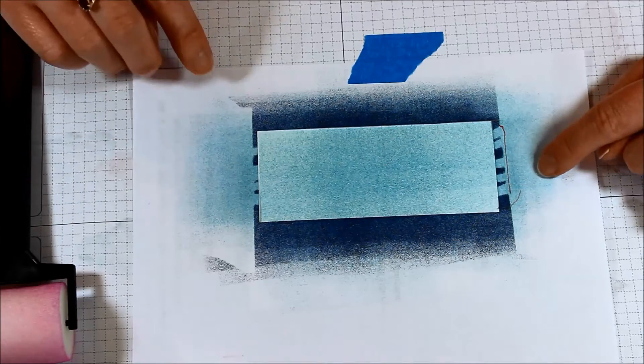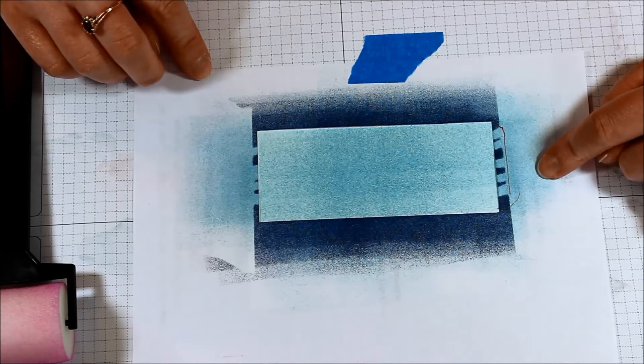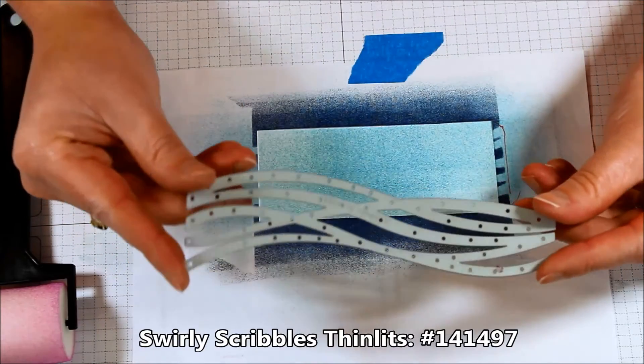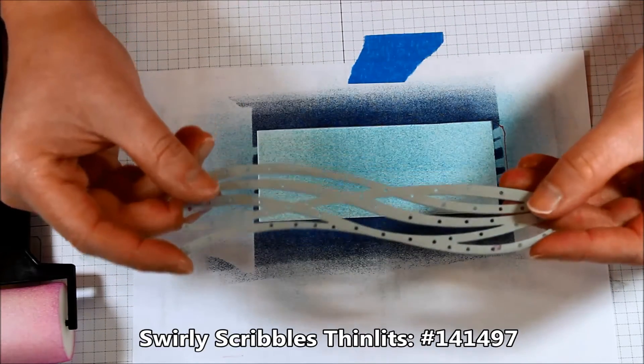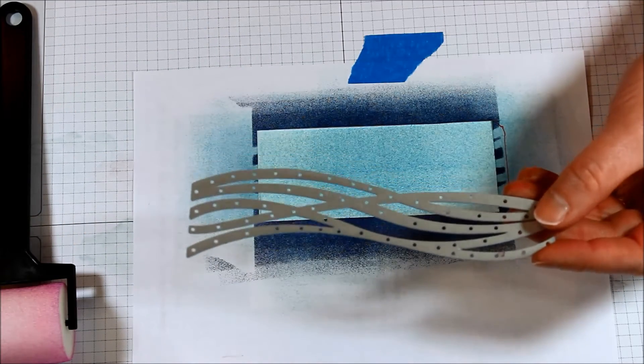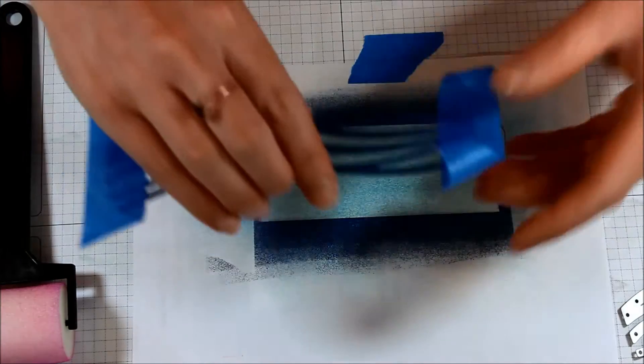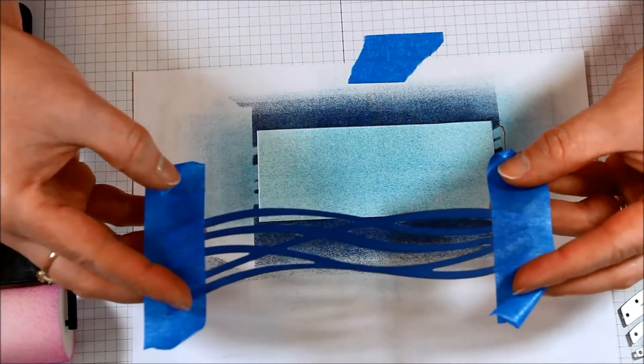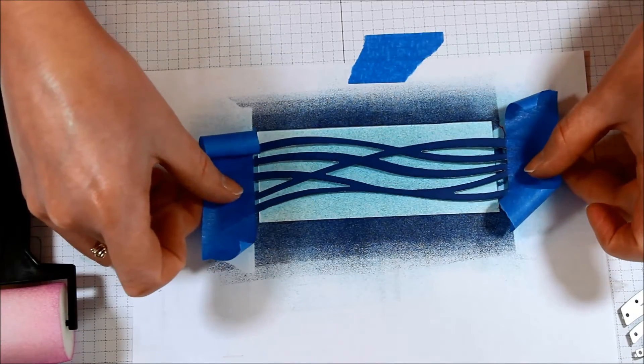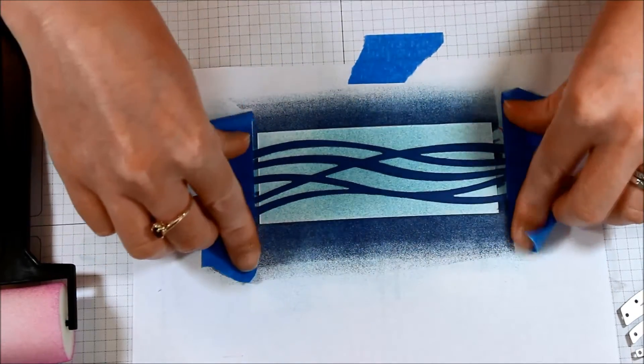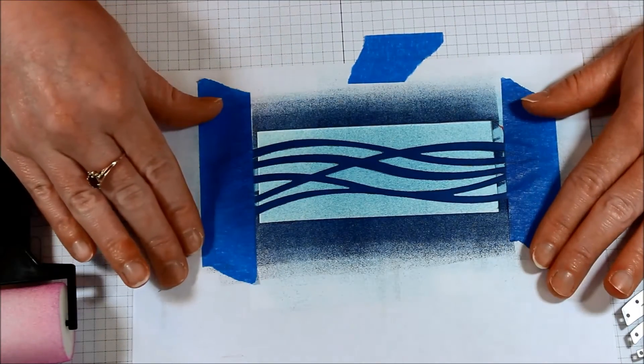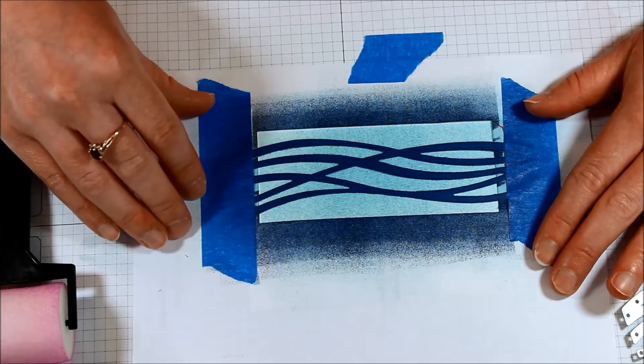So now we have that nice little layer of our Marina Mist. Then I took the Swirly Scribbles die, this fabulous one, and I die cut some of the cardboard that comes on the back of your designer series paper. So here I have die cut that and I have some painter's tape on either side and I'm just going to lay this over my mask. So now we have that fabulous look which looks super amazing just like that.